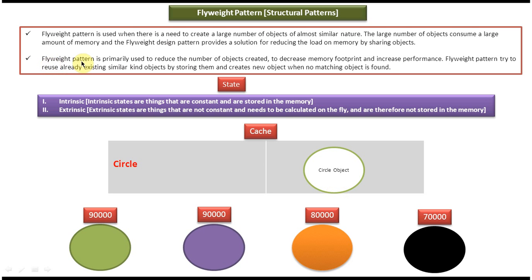Second explanation: Flyweight design pattern is primarily used to reduce the number of objects created, to decrease memory footprint and increase performance. In this example I created the circle object only one time and I am sharing that circle object for creating multiple circles with different colors. Flyweight pattern tries to reuse already existing similar kind of objects by storing them, and creates a new object when no matching object is found.